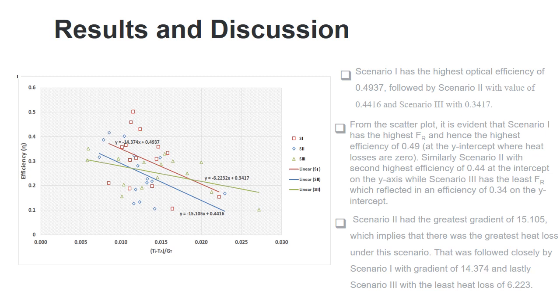scenario 1 did not practically record the highest heat loss. This could imply that the heat loss is not only a function of wind speed. However, scenario 3, which had the lowest wind speed during the test, recorded the least heat loss as well. The value of UL varies with wind speed.